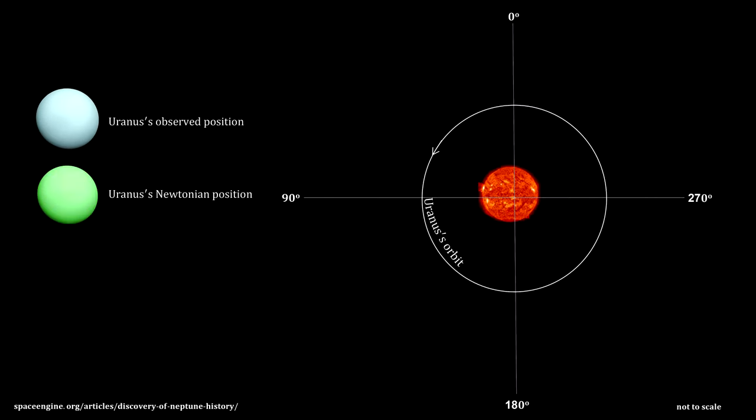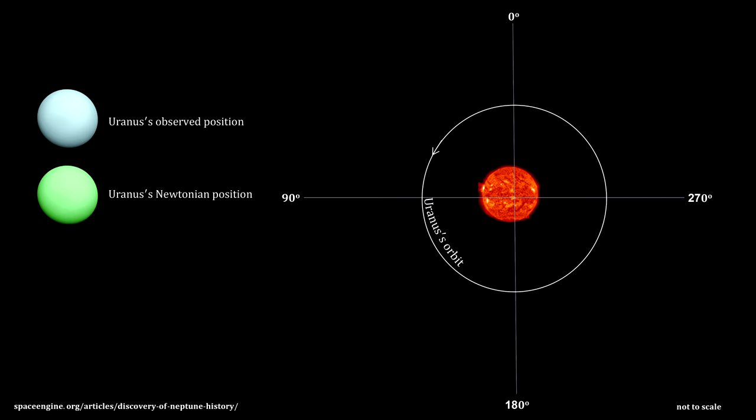A careful study over decades showed that Uranus's orbit did not fit Newton's equations. At times it was moving faster than predicted, and at other times it was moving slower.